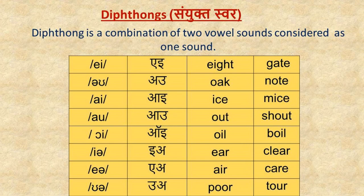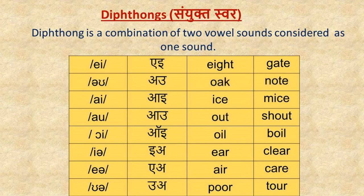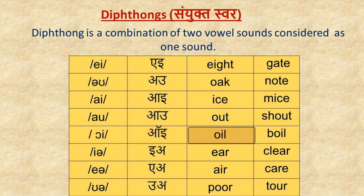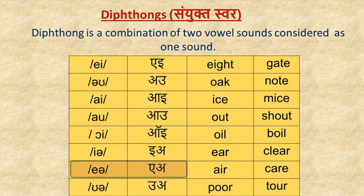A diphthong is a combination of two vowel sounds considered as one sound. Let's read these words aloud for the 8 diphthongs: /eɪ/ — eight, gate; /əʊ/ — oak, note; /aɪ/ — eyes, mice; /aʊ/ — out, shout; /ɔɪ/ — oil, boil; /ɪə/ — ear, clear; /eə/ — ear, care; /ʊə/ — poor, tour.